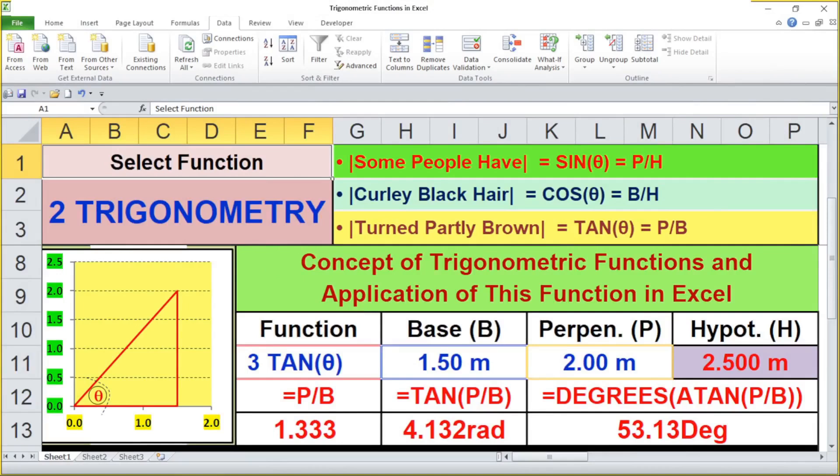That's a wrap on today's Excel adventure. In this tutorial, we've explored the fundamental trigonometric functions in Excel. We've seen how to calculate sine, cosine, and tangent using the sine, cos, and tan functions, respectively. We've also delved into their inverse functions, asine, acos, and atan, which help us find angles from given side ratios. It is important to remember, these functions work with angles in radians. By converting degrees to radians, you'll be able to solve a wide range of problems in engineering, physics, and other fields.